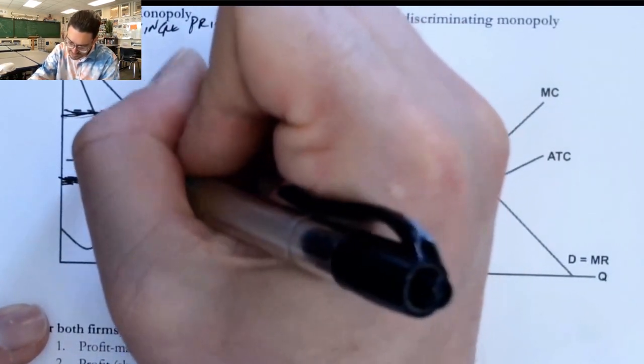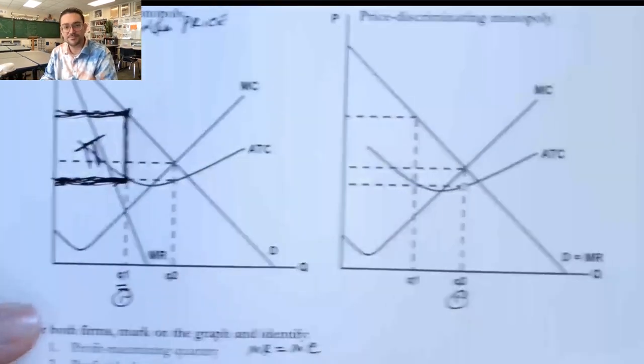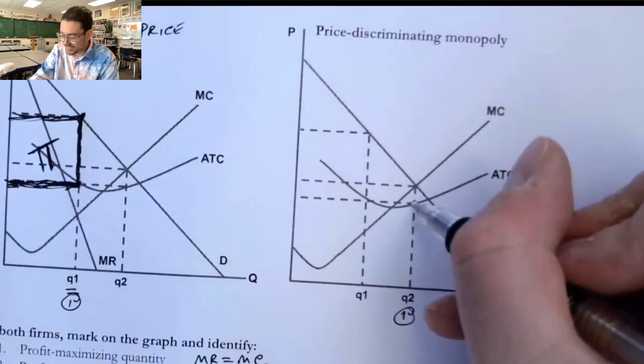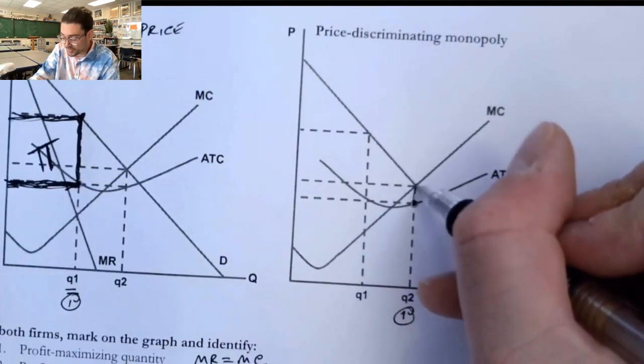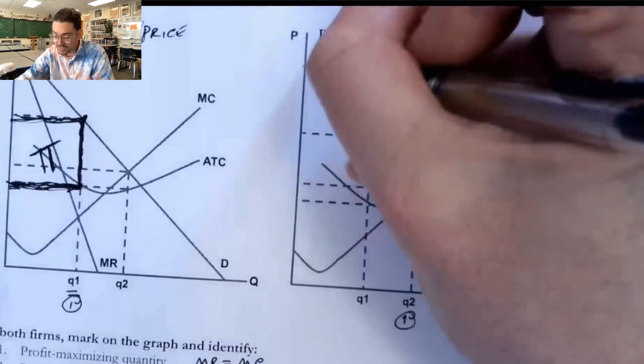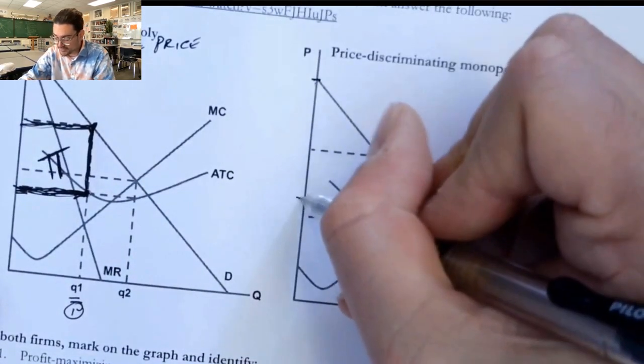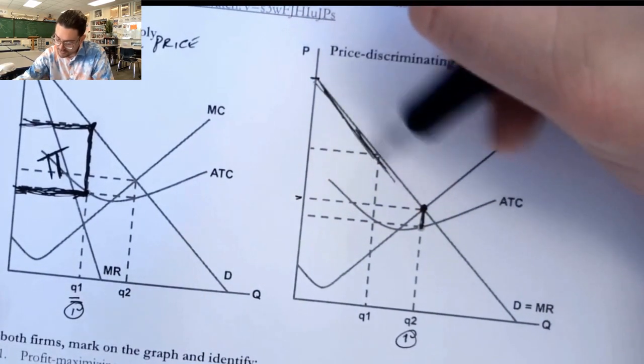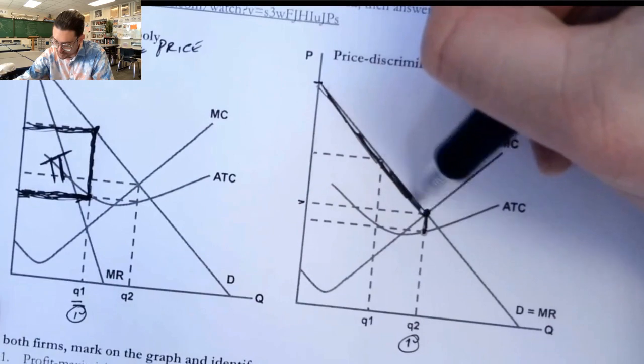Now on this firm, it's a little bit different. If they're producing here, the ATC value here up to the price they're charging. And then because they're charging actually every single customer every single different price in this whole range, then actually the profit goes all the way up the demand curve as well.